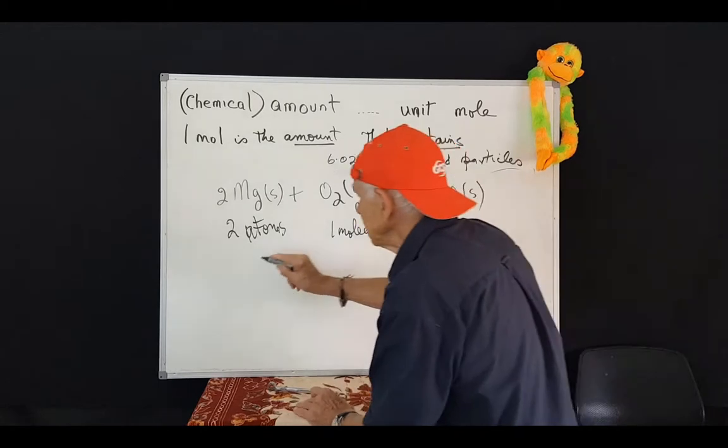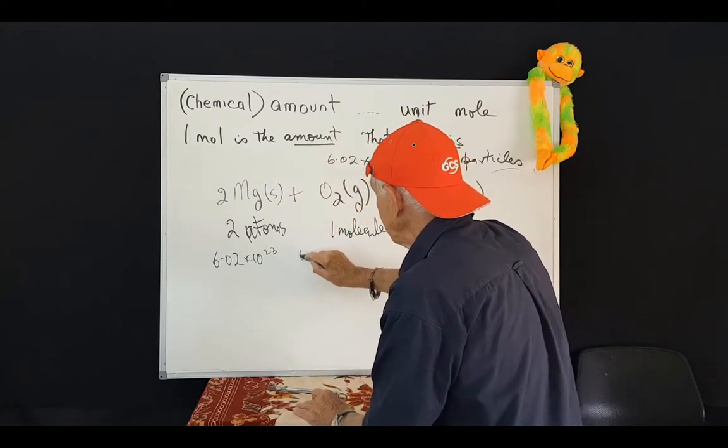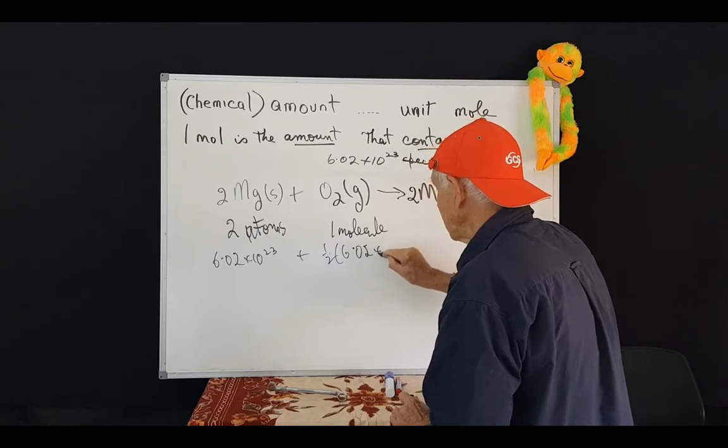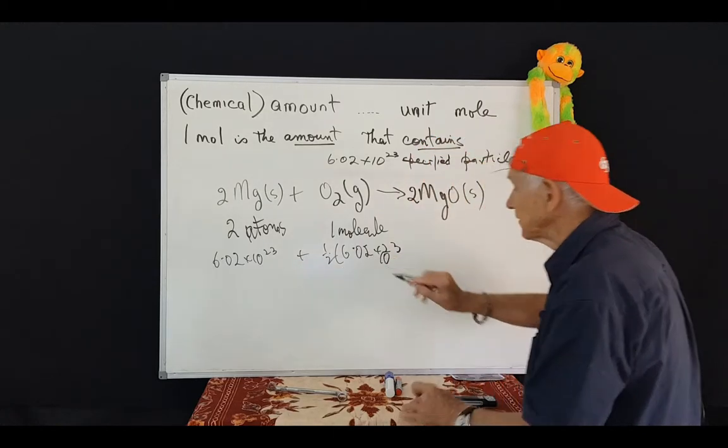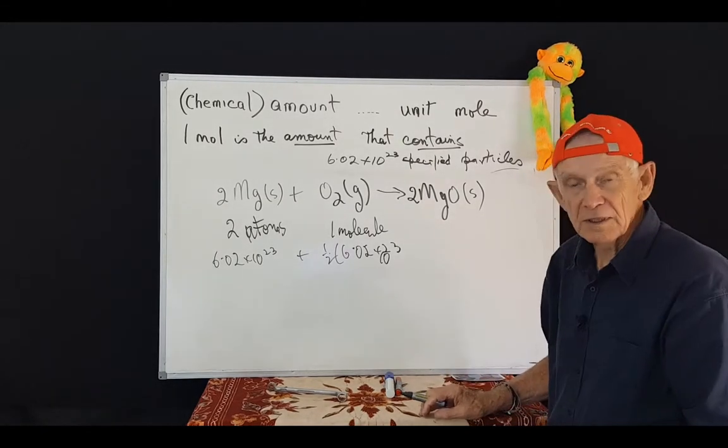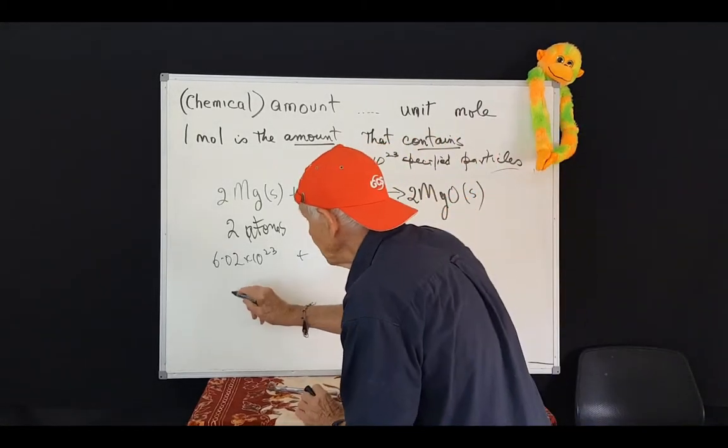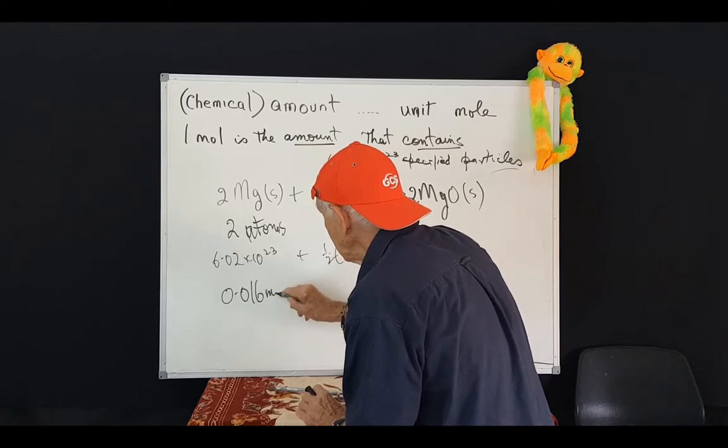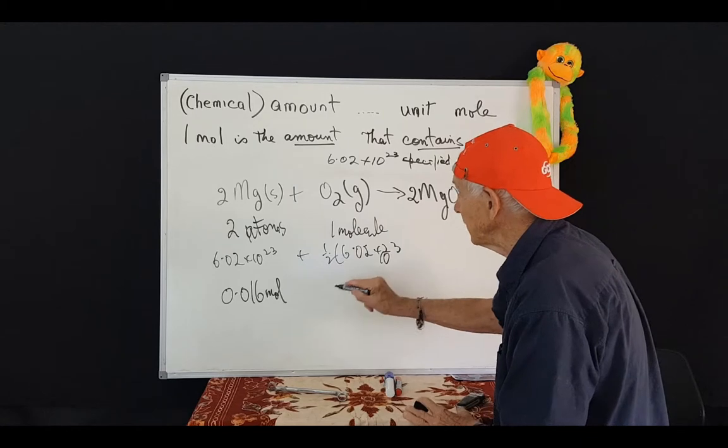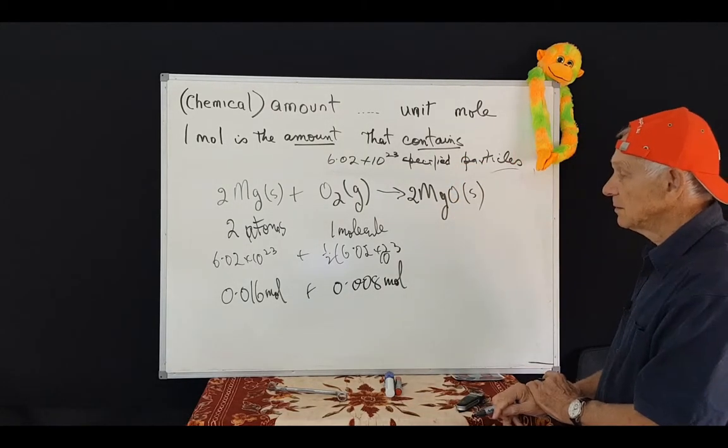So, if, for example, 6.02 by 10 to the 23 atoms react, then we know that the number of molecules of oxygen that react is half of 6.02 by 10 to the 23. And, of course, this is one mole and this is half a mole. Let's take it a bit further. Suppose we know that we had a sample of magnesium whose mass was such that we had 0.016 moles of magnesium. Then I would know immediately that the amount of oxygen that was consumed in that burning reaction would be 0.008 of a mole. Is that right?